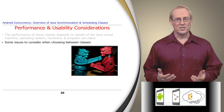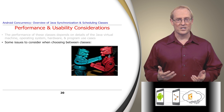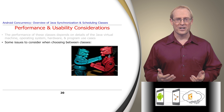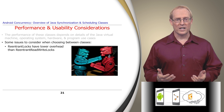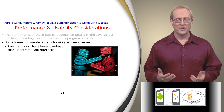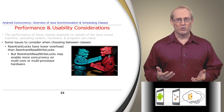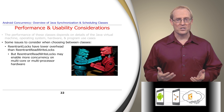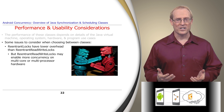There are other issues to consider when choosing between the Java synchronization and scheduling classes provided by Android. ReentrantLocks have lower overhead than ReentrantReadWriteLocks, since the latter has more complicated semantics and implementation complexity. On the other hand, ReentrantReadWriteLocks can enable more parallelism on multi-core or multi-processor hardware, especially if an object's data is read much more often than it's written to.